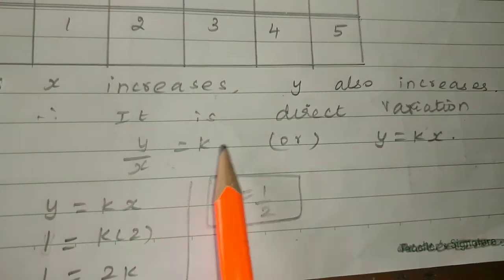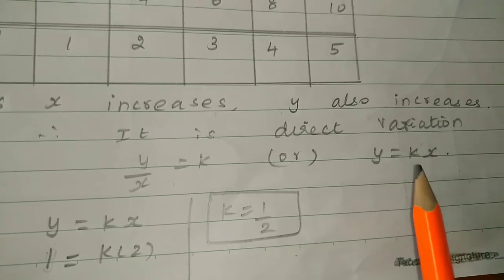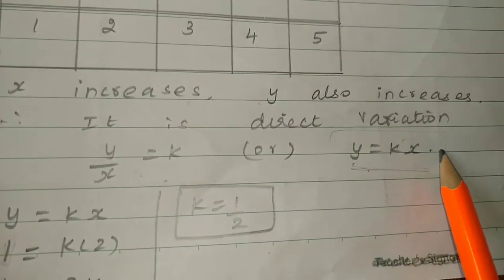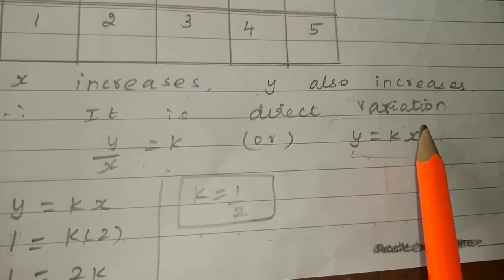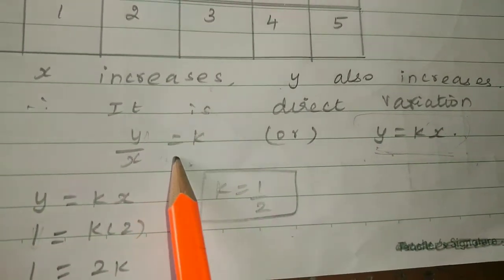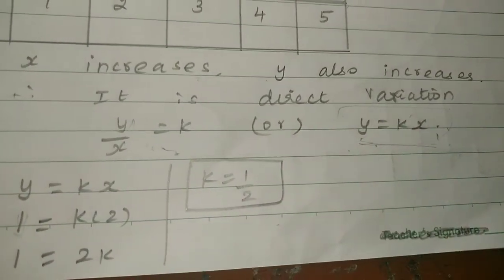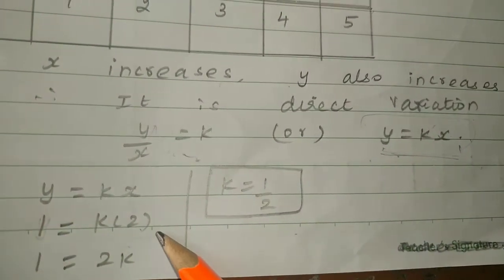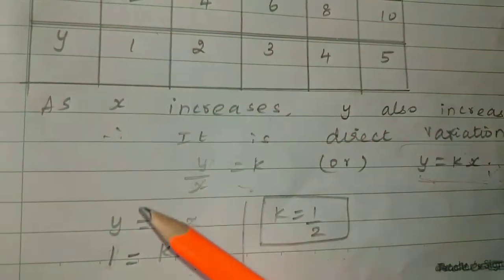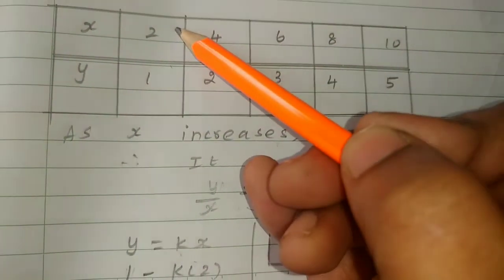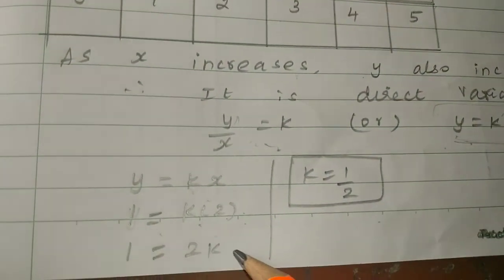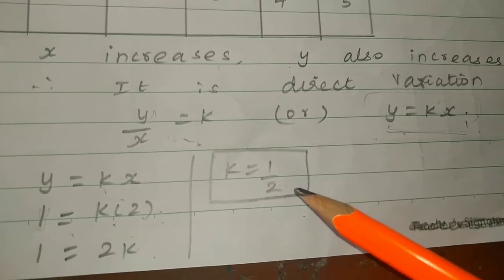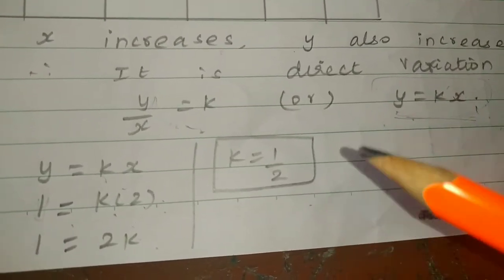For direct variation, the rule is y by x is equal to k. Normally, direct variation is y equal to kx. This is the formula. The constant of variation k: from our equation y equal to 1 by 2x, we have y equal to kx, so k is equal to 1 by 2. Therefore the constant of variation is equal to 1 by 2.